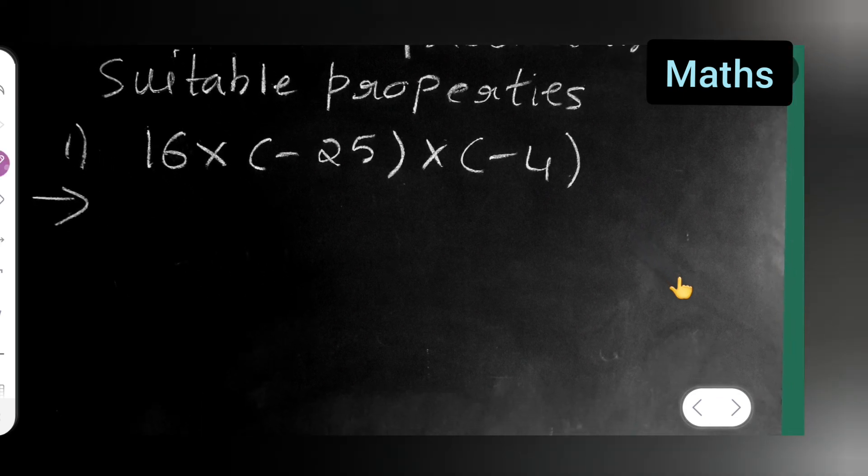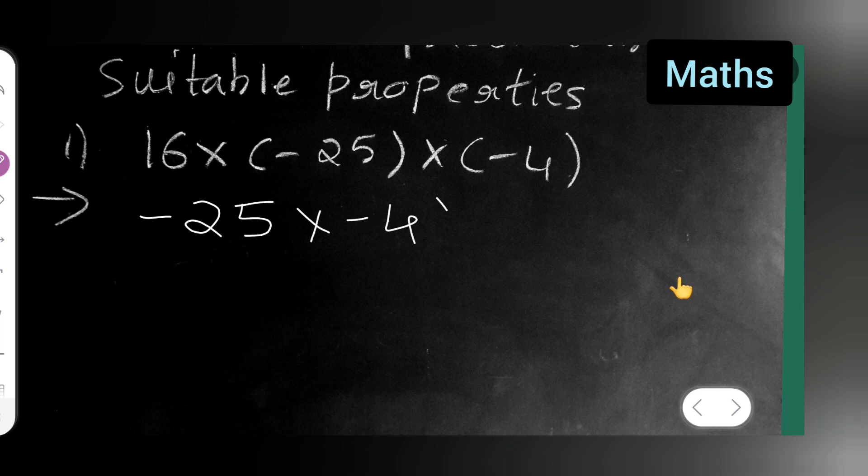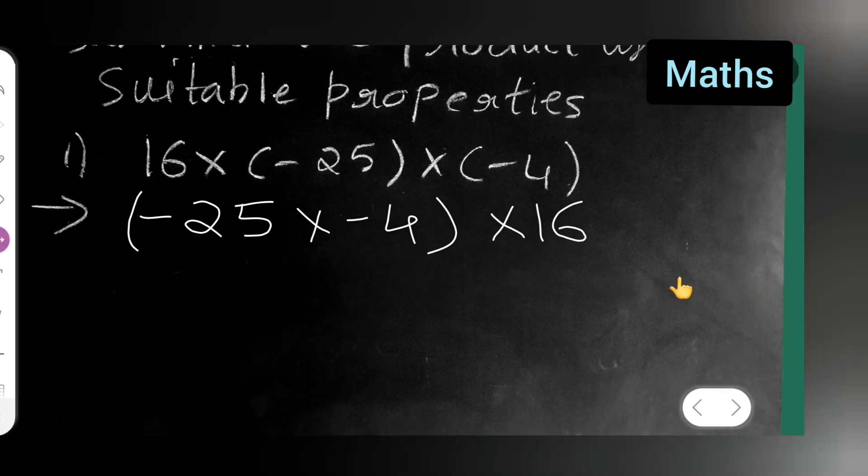First take minus 25 multiplied by minus 4 together and then multiply by 16. So why we have taken these two numbers together?